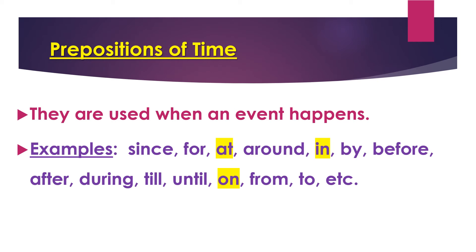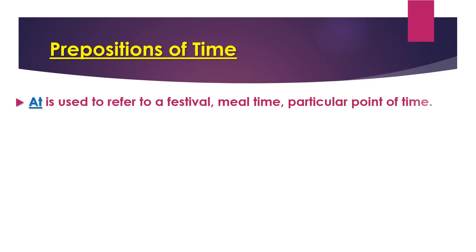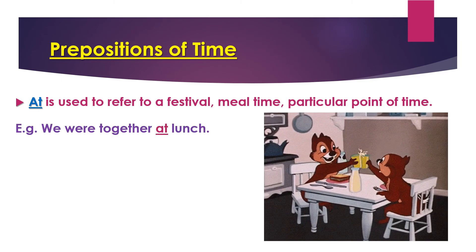Note that 'at,' 'in,' and 'on' are highlighted because they are also used as prepositions of place and position. Now let us see how to use them as prepositions of time. 'At' is used to refer to a festival, meal time, or any particular point of time of the day. For example, 'we were together at lunch.'